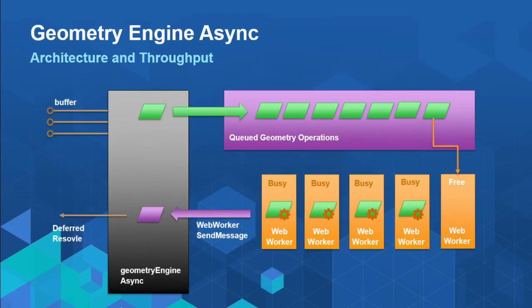Regarding the async geometry engine internals — we don't create 500 web workers when you call the geometry engine 500 times. We have a queuing system. We start with just one web worker, and if the queue starts filling up, we create another, and another, up to about four to eight. We're not going to swamp your browser or create hundreds of web workers. Operations get queued, and as soon as a web worker becomes available, the method goes on to it, gets resolved, and the result comes back. You need to take into account that it will take longer the more operations you put onto it.